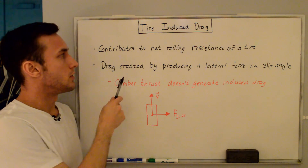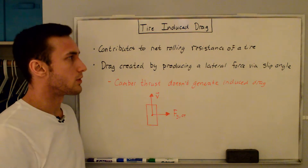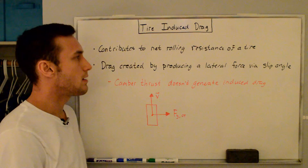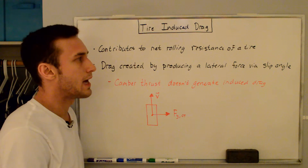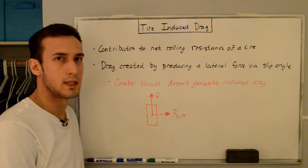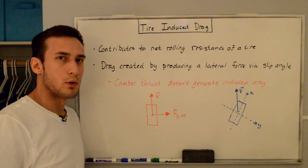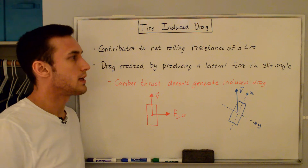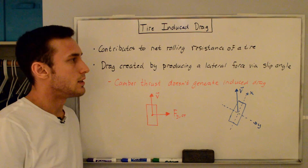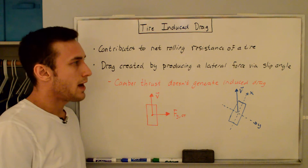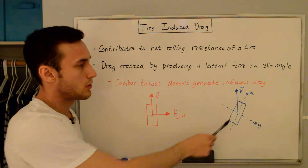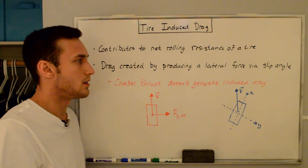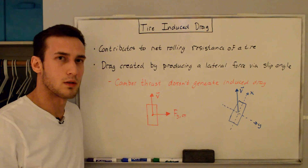Tire induced drag contributes to the net rolling resistance of a tire, and it's the drag that is created by producing a lateral force via a slip angle. The induced drag is resolved not in the tire axis system — shown here with the x and y axes — but in the direction of the velocity vector.